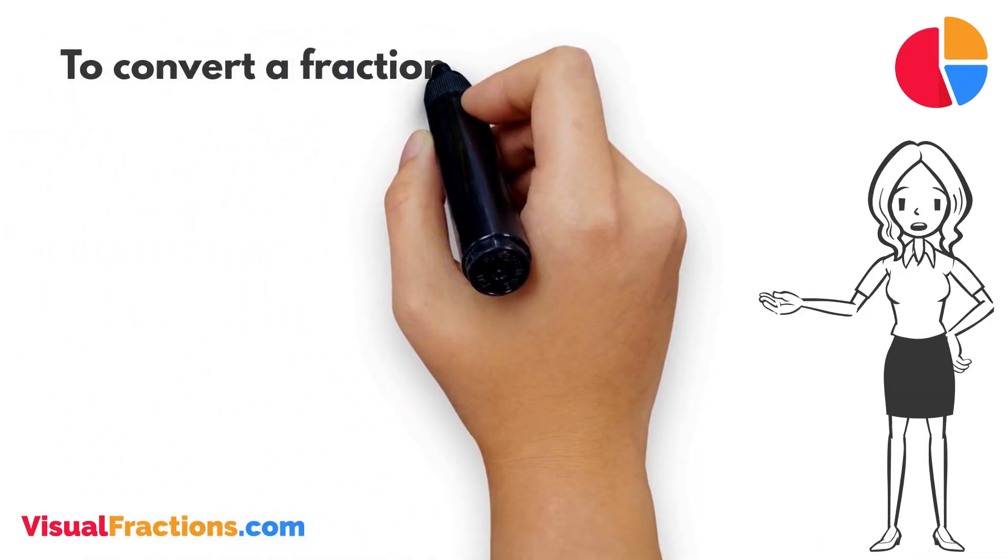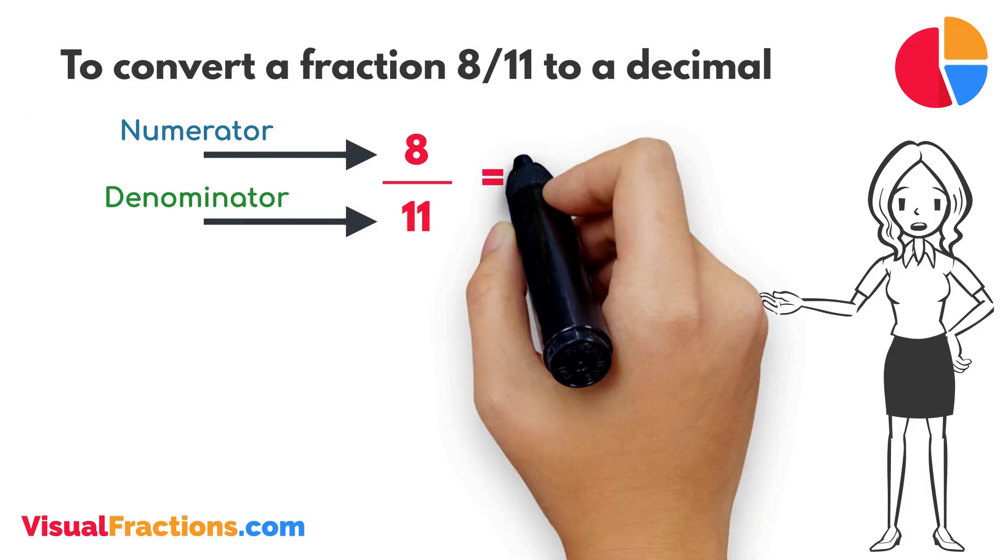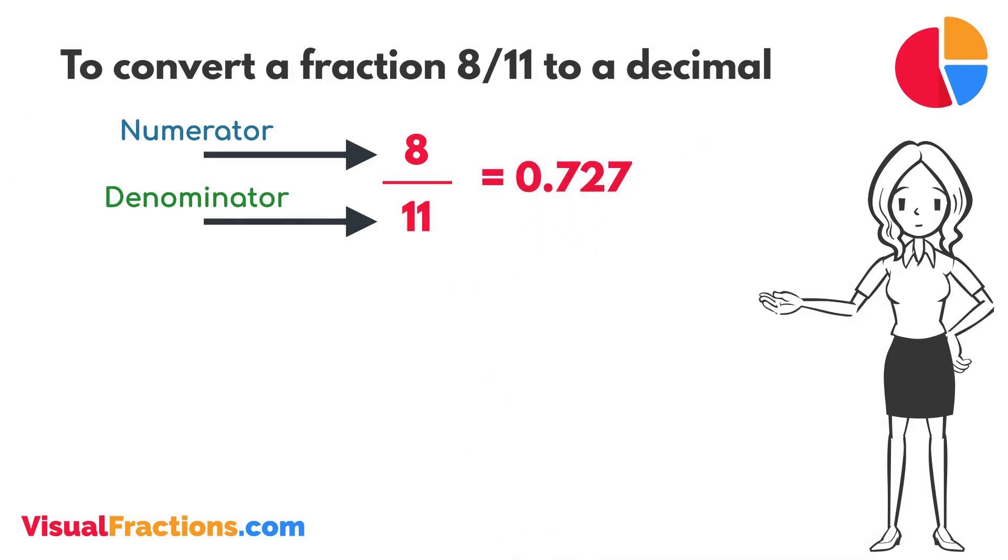To convert the fraction 8 elevenths to a decimal, all we need to do is divide the numerator, the top number, by the denominator, the bottom number. In this case, we want to convert 8 elevenths to a decimal, so we simply divide 8 by 11. The answer we get is 0.727.